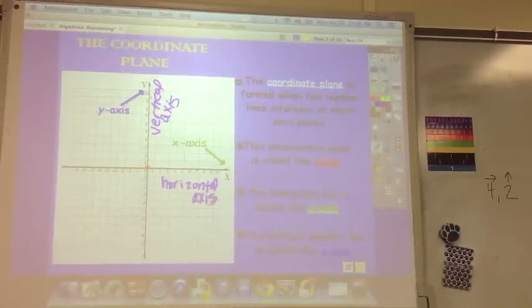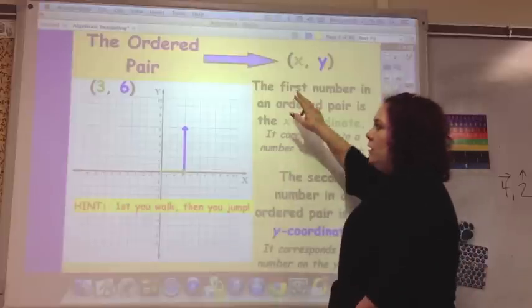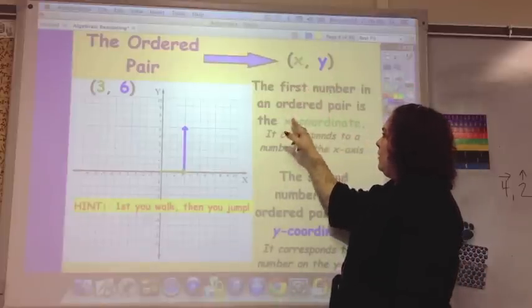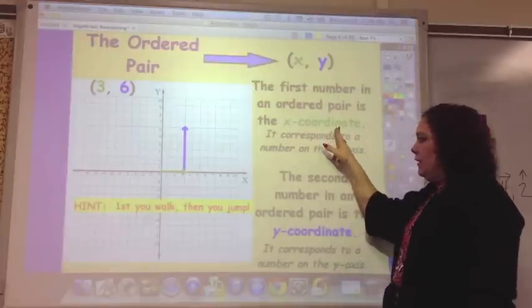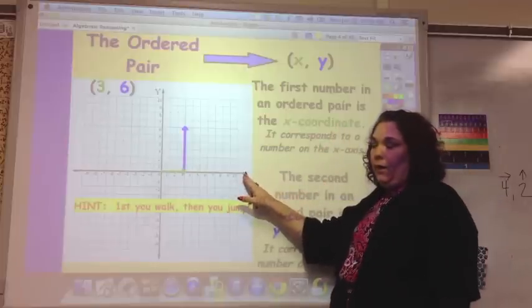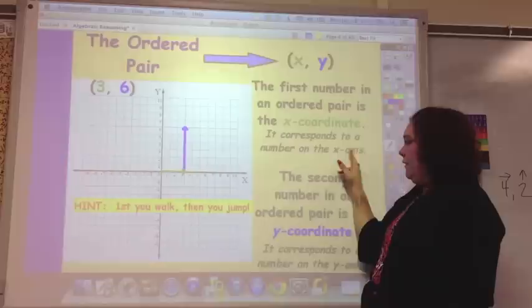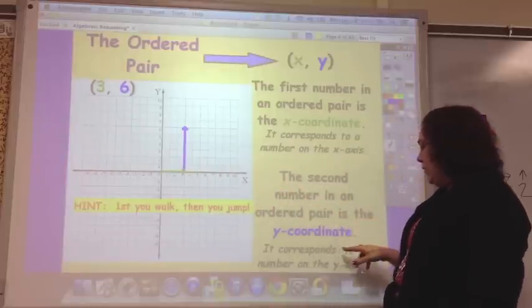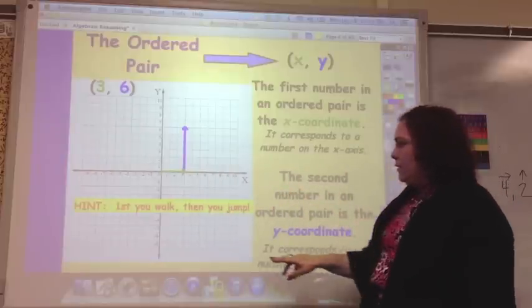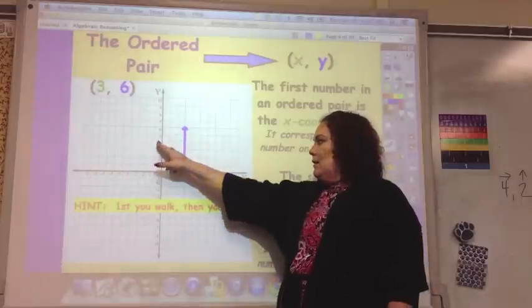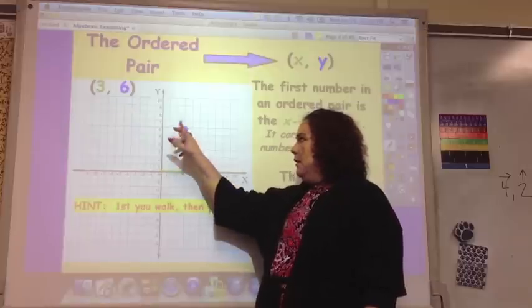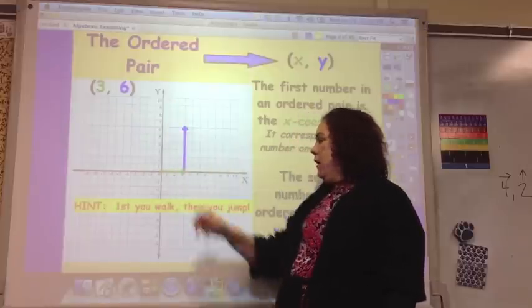The ordered pair is x and y. The first number in the ordered pair is the x-coordinate, because x comes before y in the alphabet. It corresponds to the number on the x-axis. Then the second number in the ordered pair is the y-coordinate. It corresponds to the y-axis. So, you go x and then y, and you just follow these lines.